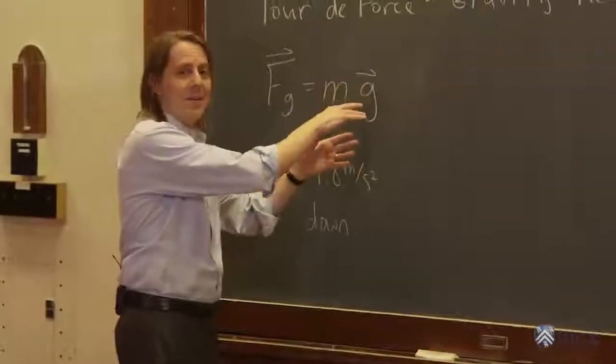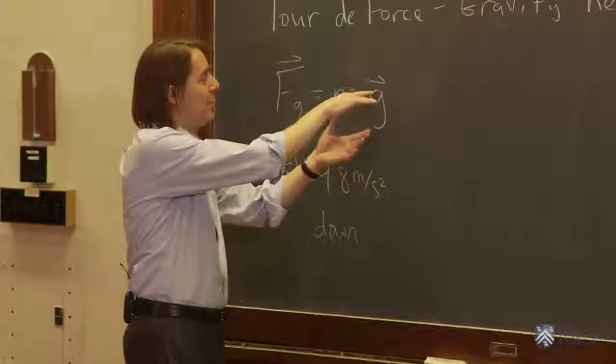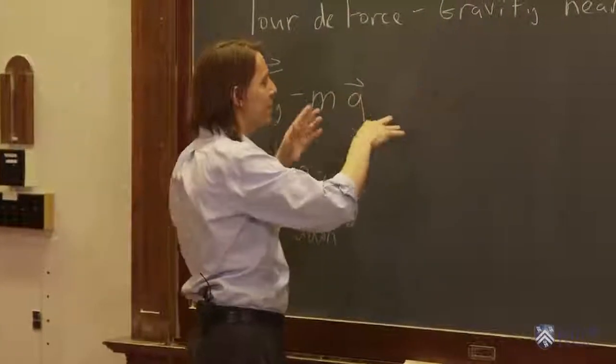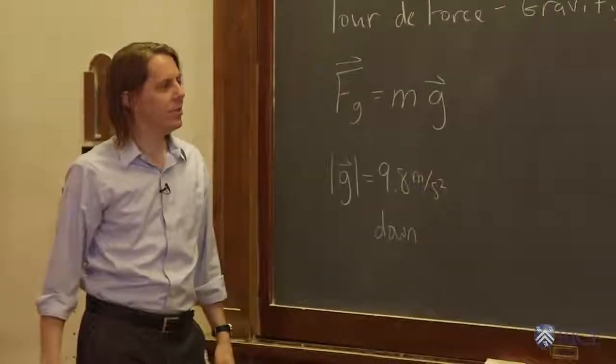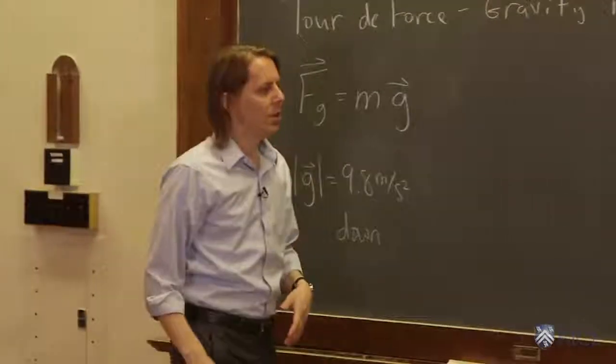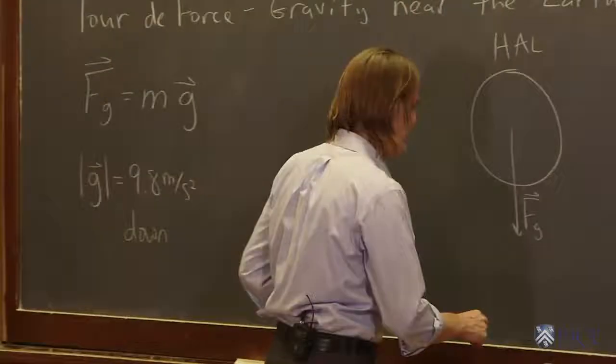So the reason they fell at 9.8 meters per second squared is because when you set this equal to MA and the mass is canceled, the acceleration you get is equal to the small g gravitational constant. But let's go look and see what the actual forces were when we dropped those masses.